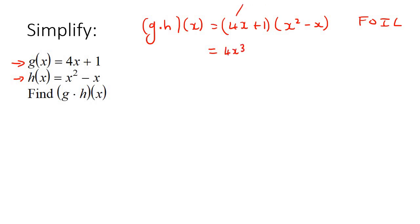The outers, meaning this one and this one, that's going to be negative 4x². Then it's the inners, so that would be this one and this one. And then L times L, which means last, the last one and the last one, and that's going to give us negative x. So if you work that out, it's going to give you 4x³ - 3x² - x.